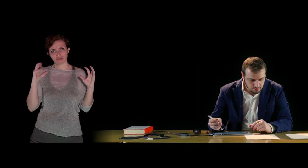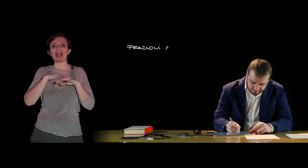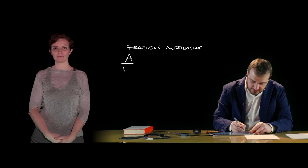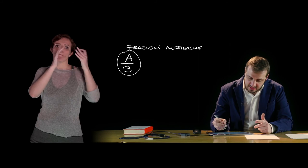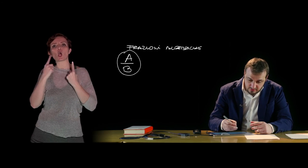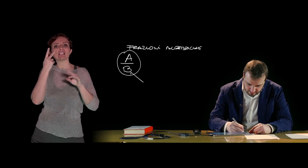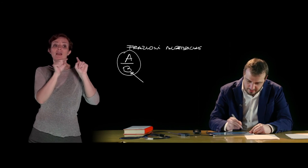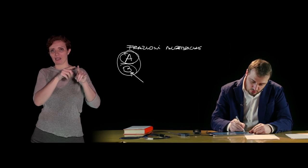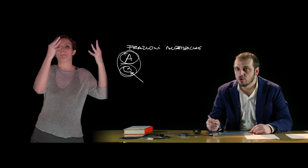Un ultimo concetto da ricordare è quello delle frazioni algebriche, trattato rapidamente rimandando al materiale sulla piattaforma. Le frazioni algebriche sono il rapporto tra due polinomi A e B. Per le frazioni algebriche è necessario stabilire la condizione di esistenza, cioè le disuguaglianze che le variabili devono verificare affinché il denominatore non sia nullo. Dopodiché si semplifica la frazione scomponendo numeratore e denominatore ai minimi termini e individuando eventuali divisori comuni.